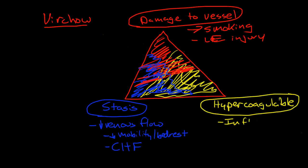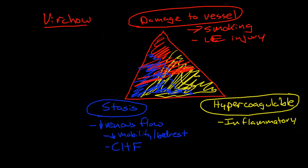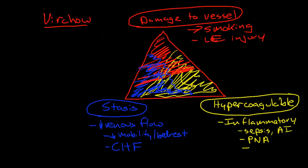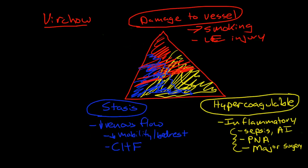Hypercoagulable conditions are many. We talked about how tissue factor can be initiated by inflammation, so anything that is an inflammatory condition can cause hypercoagulability — this could be sepsis, autoimmune disorders, pneumonia, or major surgery. Those of you who work in the hospital realize that just about everybody in the hospital has a reason to have a significant inflammatory response, and that in itself will make them hypercoagulable.